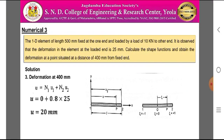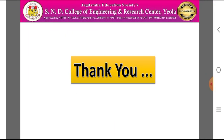The deformation at point P, located at 400 mm from the fixed end, is given by the definition of shape functions: U = N1·U1 + N2·U2. Substituting values: U = 0.2 × 0 + 0.8 × 25 = 20 mm. Therefore, the deformation of point P under the load of 10 kN is 20 mm. This concludes the numericals on shape functions for one-dimensional elements. In the next session, we will discuss numericals on shape functions for the two-dimensional element case.